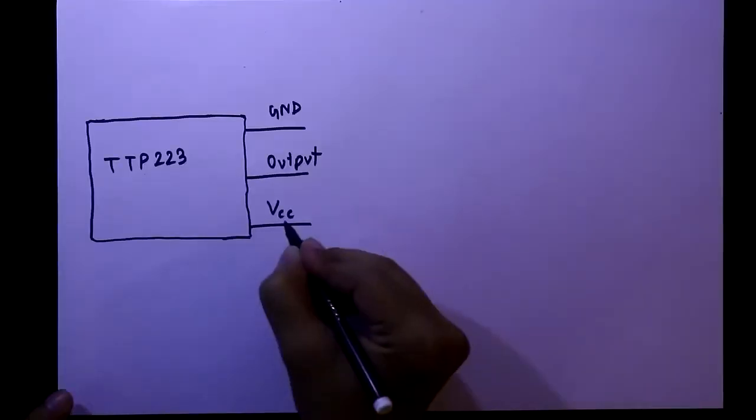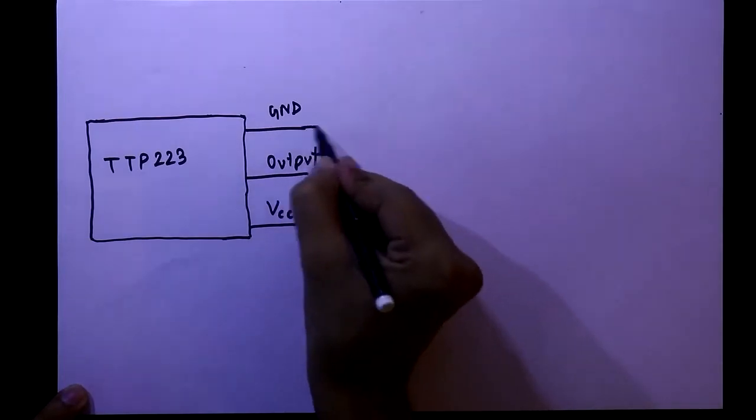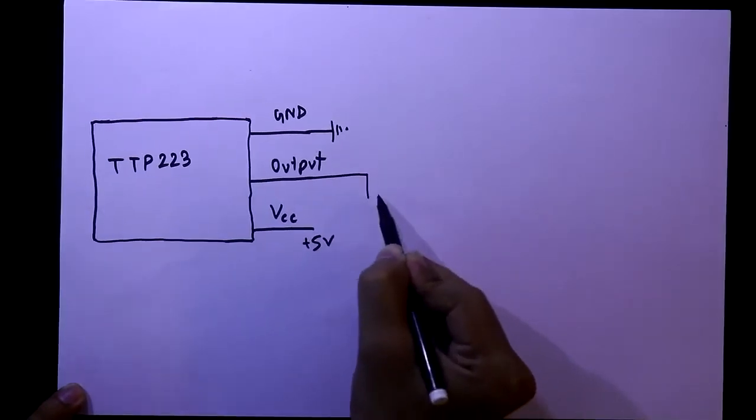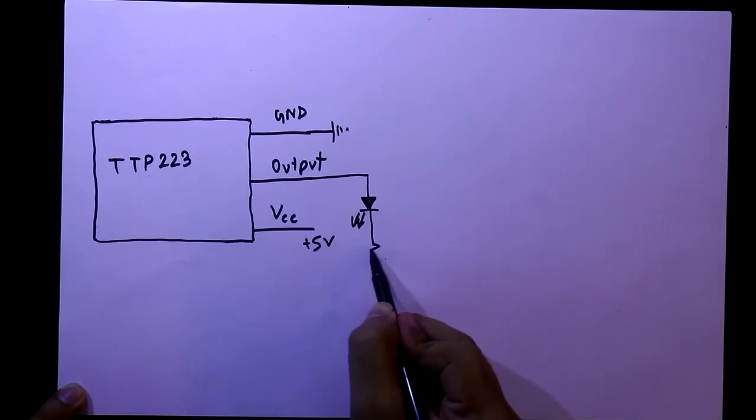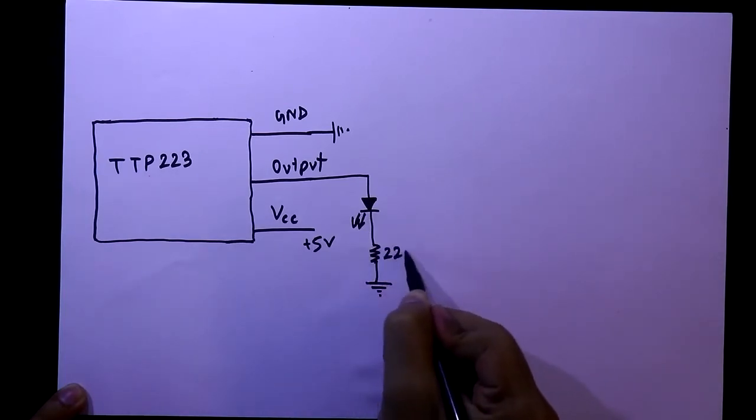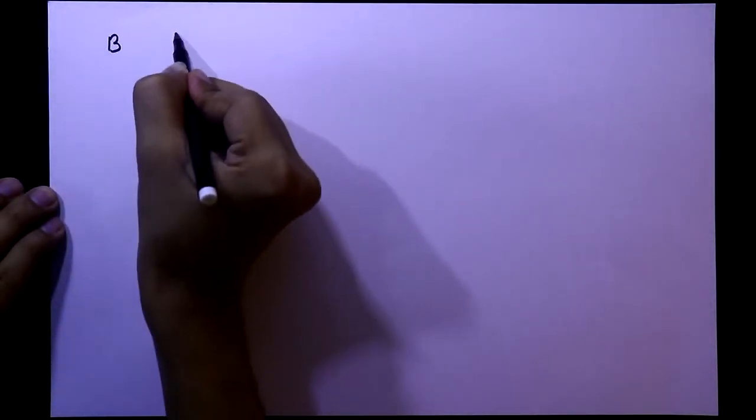The VCC will be connected to plus 5 volt, ground will be connected to the ground. With the output we will connect one LED, and then will connect one resistor and then will connect it to the ground. The value will be 220 ohms. As it has four modes, here is B and A.